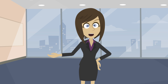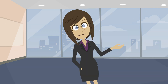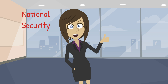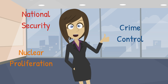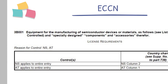Once you know your ECCN, you can determine most of your export obligations. Each ECCN entry will indicate the reasons for control for your item. BIS regulates the export of items for a variety of reasons: National Security, Crime Control, to limit the proliferation of nuclear weapons, to name a few. Each ECCN listing will tell you the reasons for control.